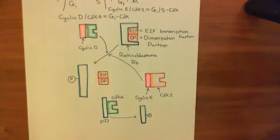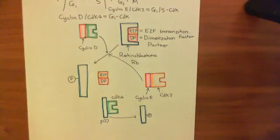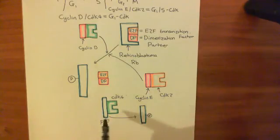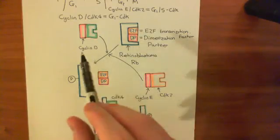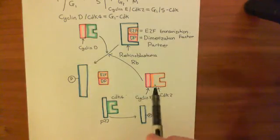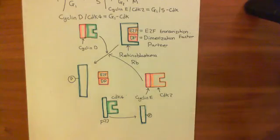P21 also binds to CDK2 enzymes, stopping CDK2 from being able to bind to cyclin E. If cyclin E can't bind to CDK2, you don't form cyclin E CDK2 complexes, and therefore you don't get inhibition of P27, you don't get a rise in cyclin D CDK4 complexes, and cyclin E CDK2 can't directly phosphorylate the retinoblastoma protein. So again, P21 prevents a cell in G1 from moving to the S phase.